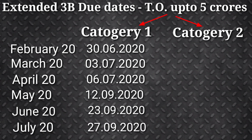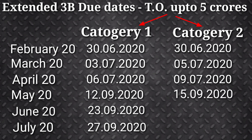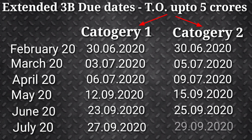For Category 2, due dates are: February — 30th June, March — 5th July, April — 9th July, May — 15th September, June — 25th September, July — 29th September.